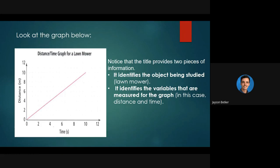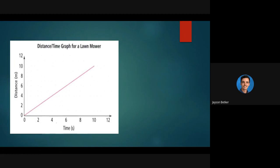Notice we've got a title. The title always needs to provide two pieces of information in physics graphs: it identifies the object being studied — in this case it's a lawnmower — and it also identifies the variables being measured. In this case we're measuring distance versus time. That's a really good title format I want you to use when we make graphs.